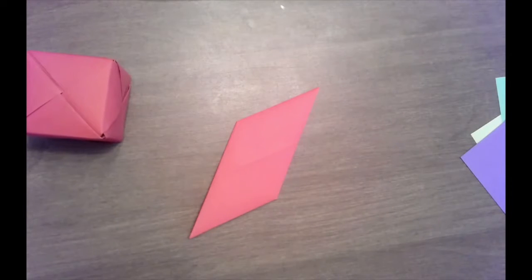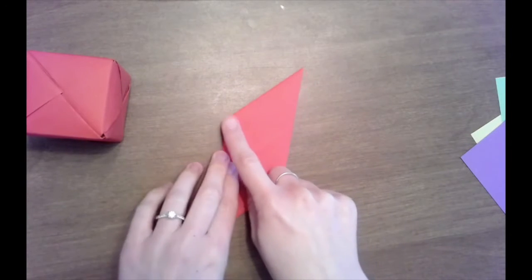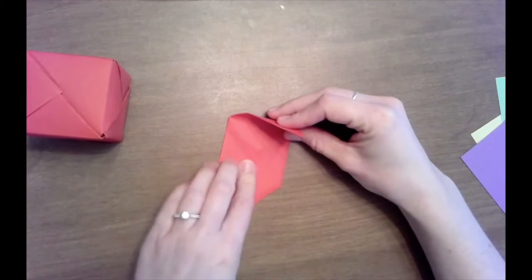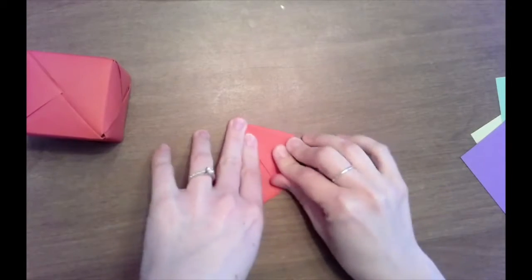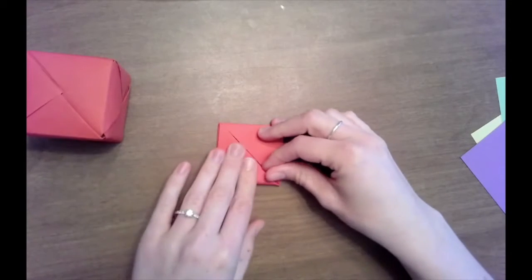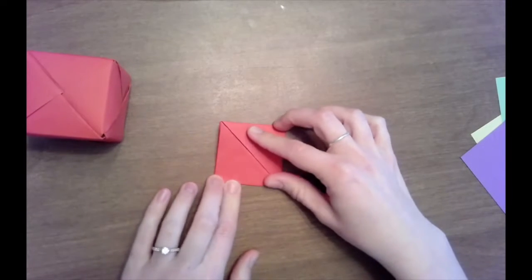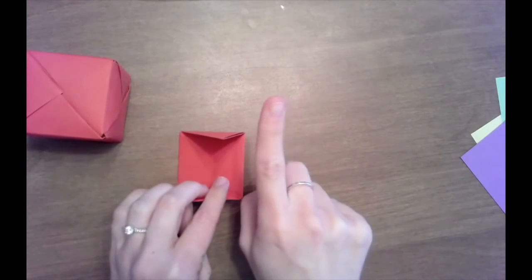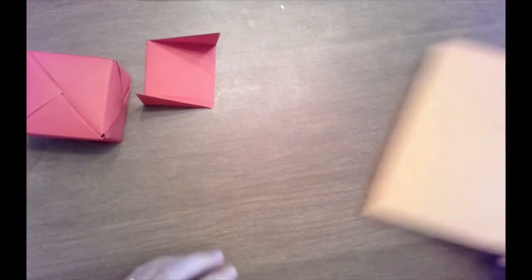Flip it over. In the center you can kind of see a square forming. So, we are going to take that top point and fold it straight down to the next corner to create a triangle. And then the bottom point straight up to that corner and now you should have a little square. You have created a Sonob unit. That is what this unit is called.